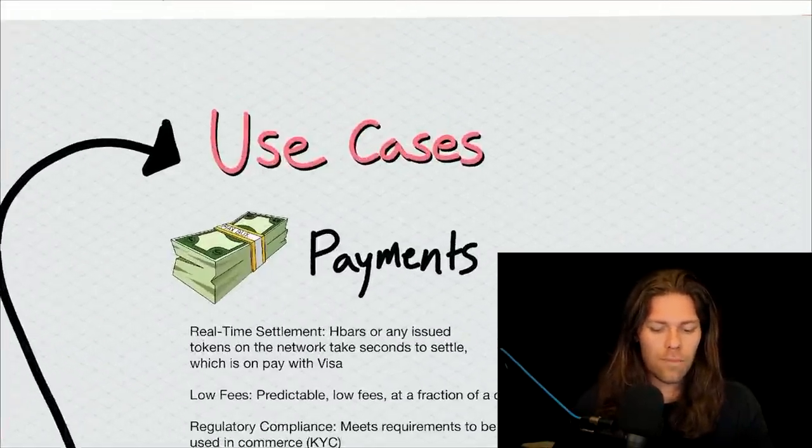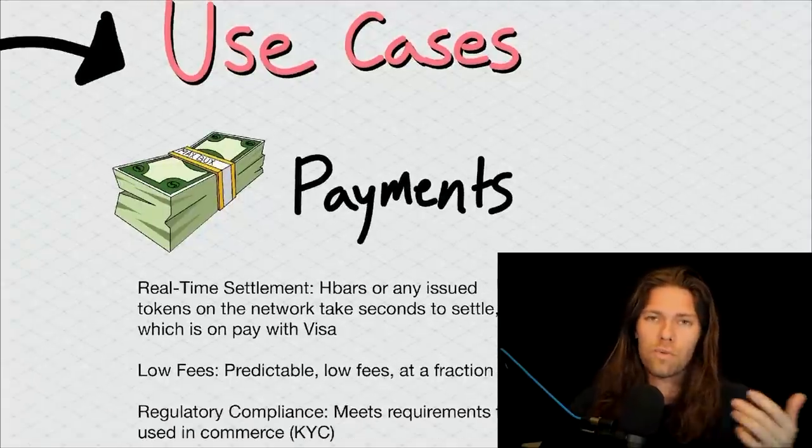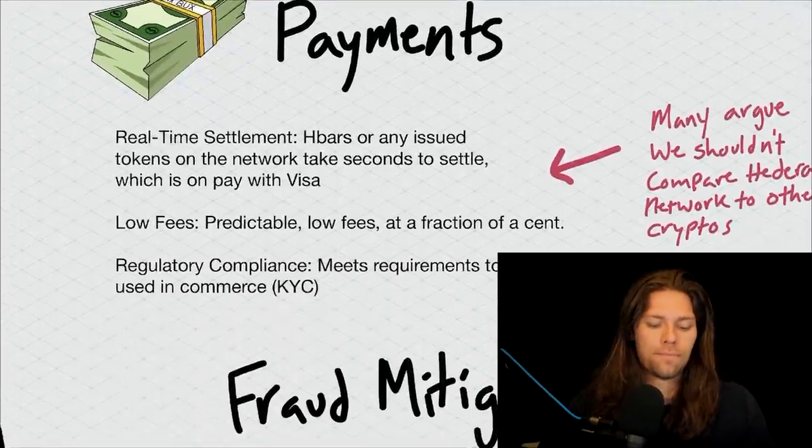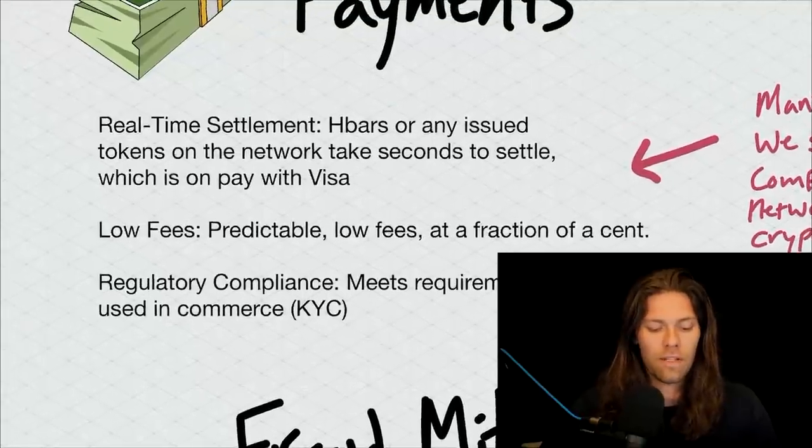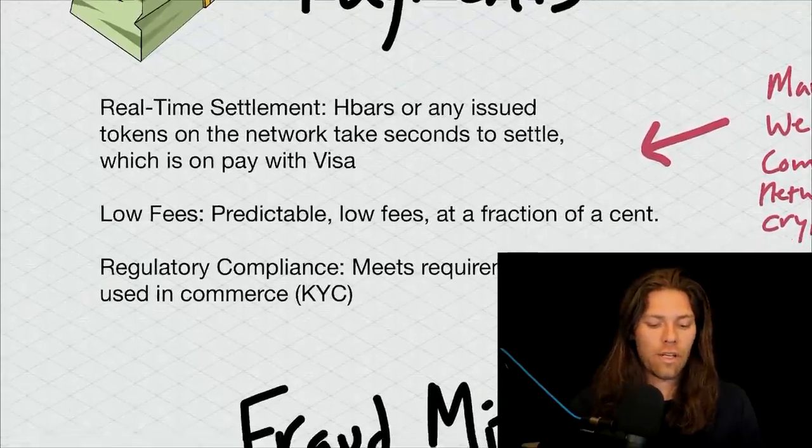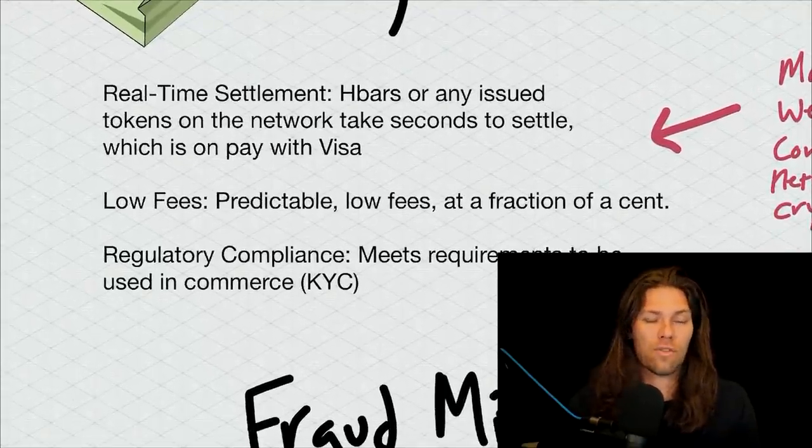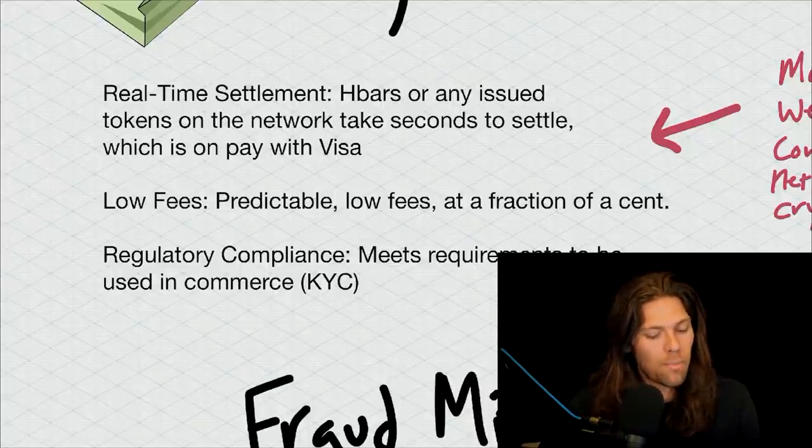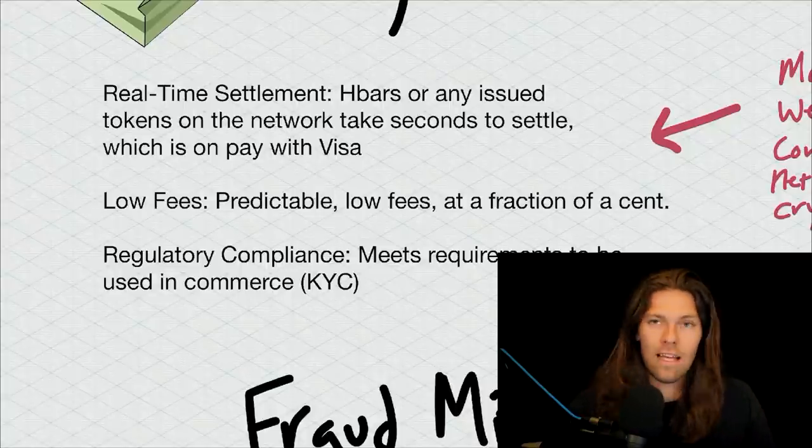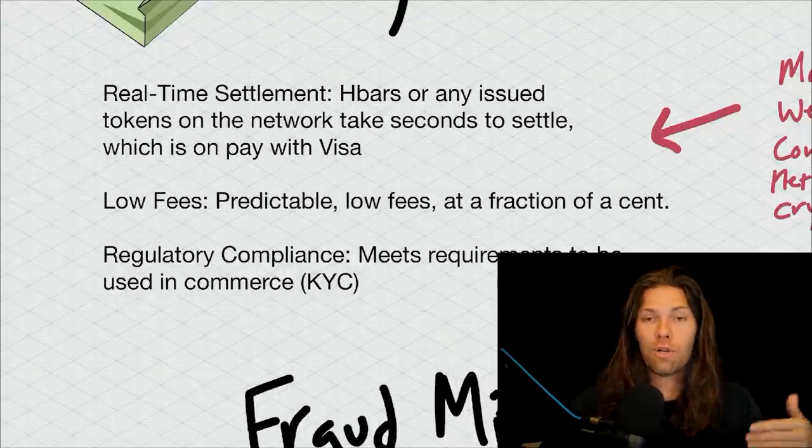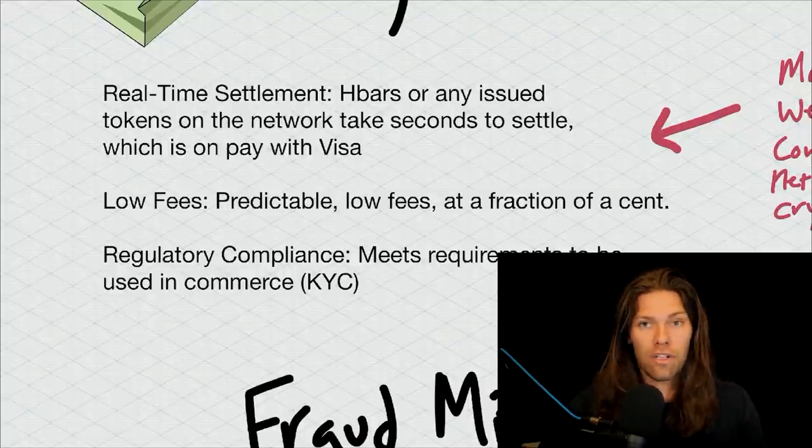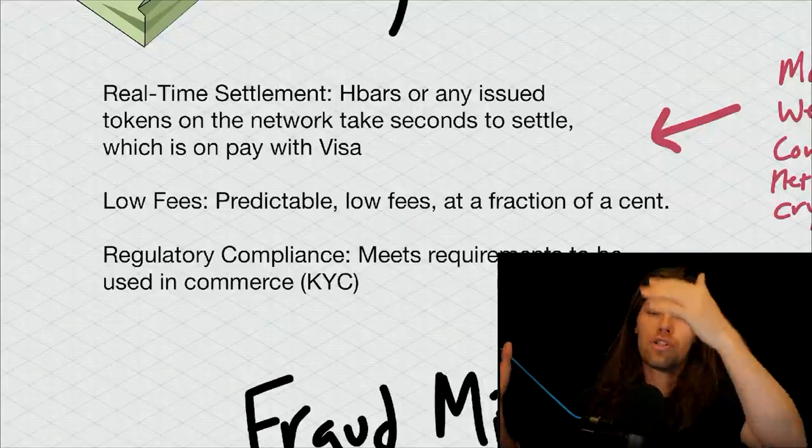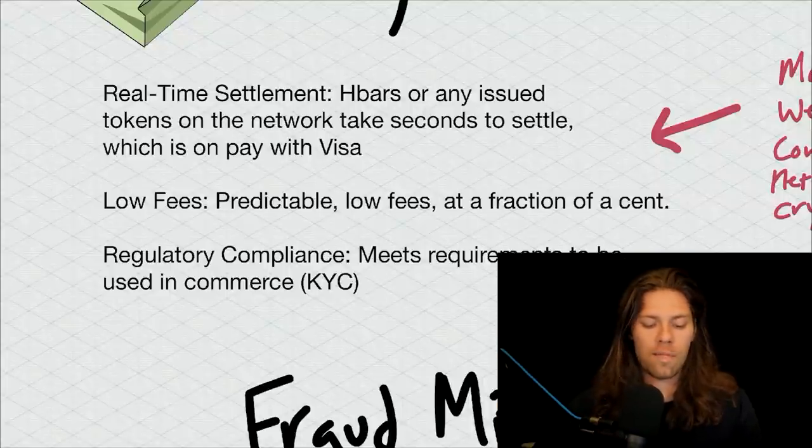First off, payments. You'll notice with a lot of these use cases, they're the same use cases as other blockchain technology, but we'll go over them either way. Real-time settlement, so this is really unique. HBARs or any issued tokens on the network take seconds to settle. Very fast transaction settlement times, which is on par with Visa. There's low fees, predictably low fees at a fraction of a penny, so extremely cheap. There's not going to be huge surges like gas fees, things like that. And there's regulatory compliance baked in, which meets the requirements for KYC, know your customer.